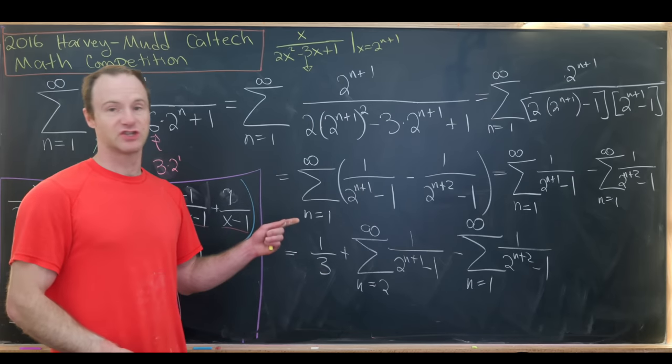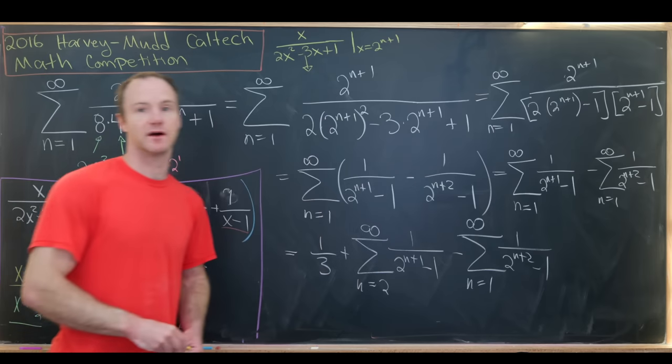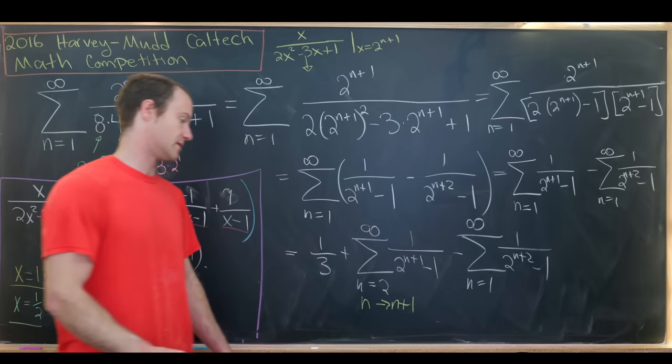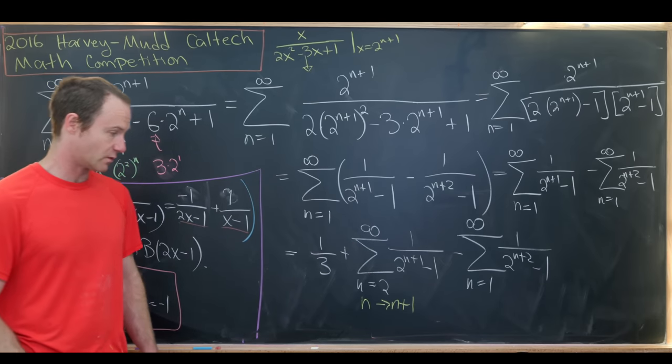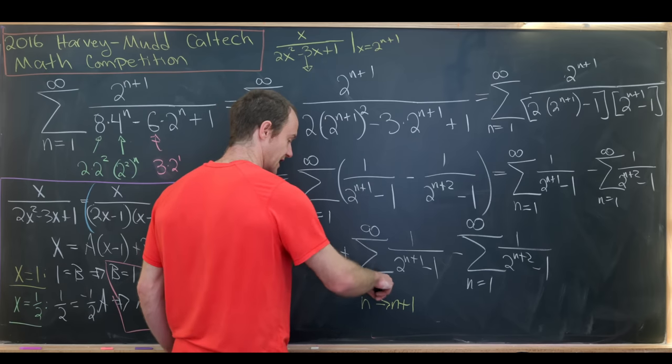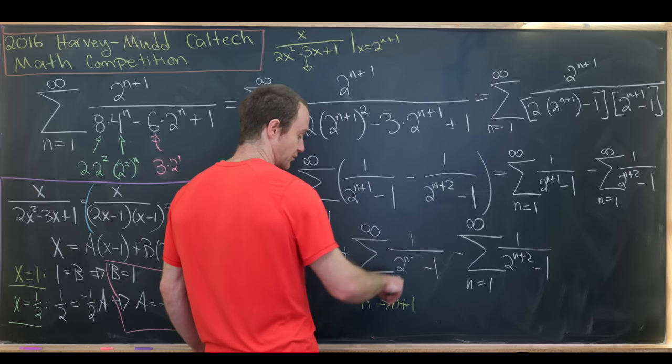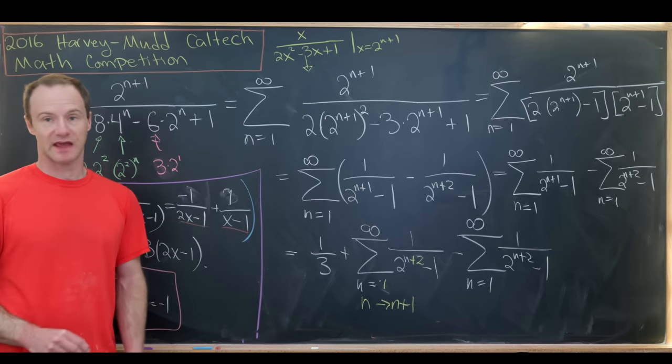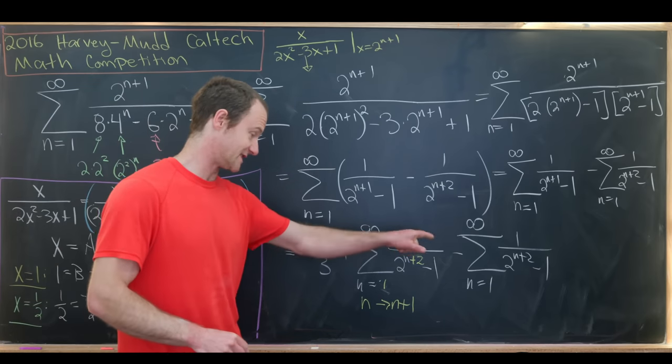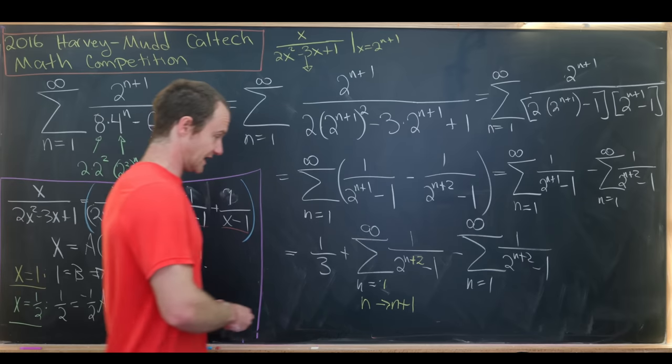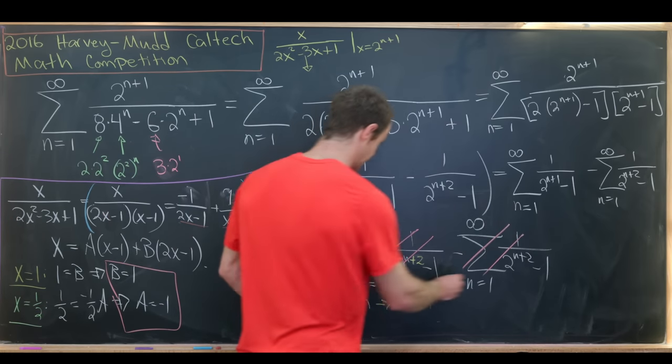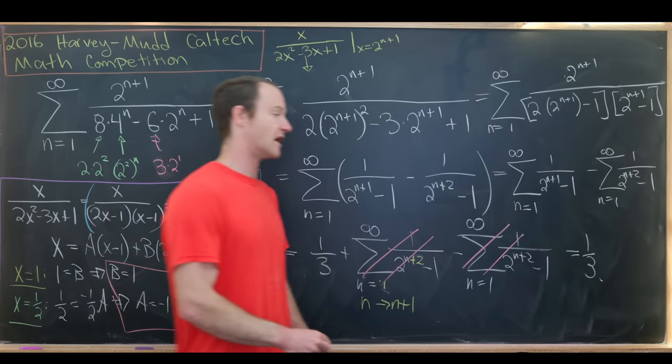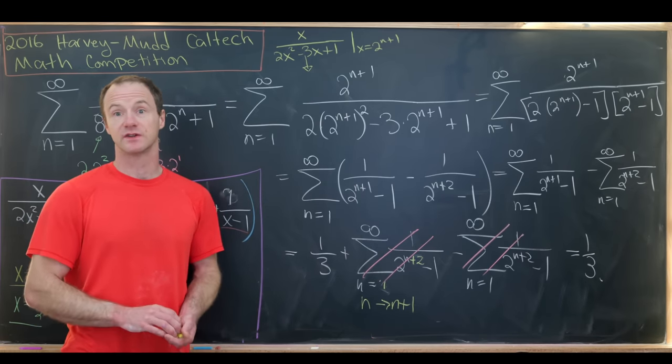Now we'll perform a change of index on this first sum. So let's go ahead and replace n with n plus 1. So if we replace n with n plus 1, when n plus 1 is equal to 2, n is equal to 1, and then n plus 1 becomes n plus 2. So that's the change that we have there. But now this first term is exactly the same as this second term, so we get a nice cancellation of this and this, leaving us with just this 1/3. So in the end, our final value for this sum is 1/3. And that's a good place to stop.